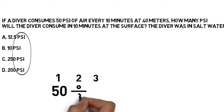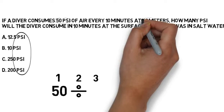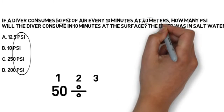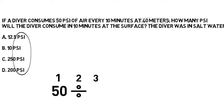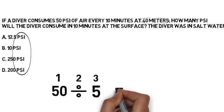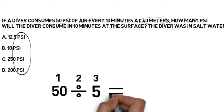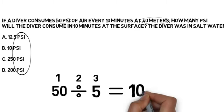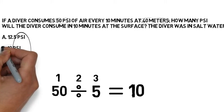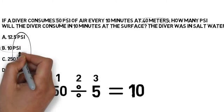How do you make 50 PSI smaller? You divide. So for step three, what is the depth given in the question? The depth is 40 meters, which using the depth-pressure chart is five atmospheres. So we now have 50 PSI and five atmospheres, and we've decided we need to divide. 50 divided by five is 10.